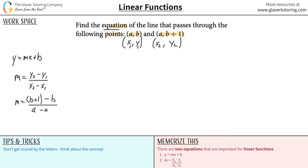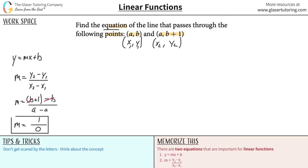Let's simplify. In the numerator, b + 1 - b: the b and negative b cancel each other out, leaving just 1. In the denominator, a - a equals zero. So we have 1 over 0, which should look kind of strange.